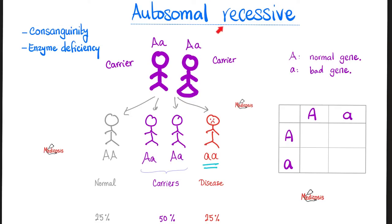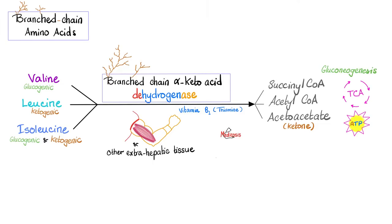Maple syrup urine disease is inherited in an autosomal recessive fashion. When a disease is autosomal recessive, odds are there is an enzyme deficiency. The name of the deficient enzyme is branched-chain alpha-ketoacid dehydrogenase.